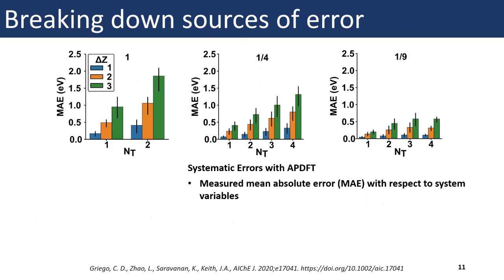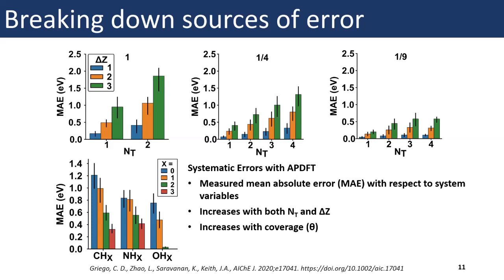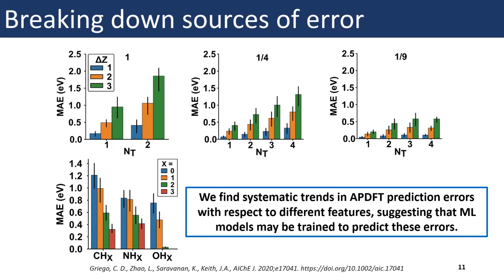We have separated the data based on different features, with bar charts showing mean absolute error plotted with respect to NT and ΔZ, and three separate plots showing data separated by adsorbate coverage. We can see that errors increase both with NT and with ΔZ, and when we increase coverage, errors also increase. Furthermore, errors decrease as hydrogenation around the central atom increases. From this, we can see that APDFT prediction errors have systematic trends with respect to these features, suggesting we can train machine learning models based on these features to predict and correct these errors.